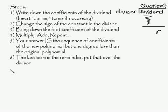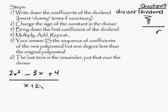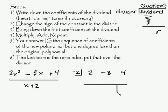I have 2x squared minus 3x plus 4, and this is all going to be over x plus 2. We're going to write down the coefficients of the polynomial, so you have 2, negative 3, and 4, and we're going to change the sign of the constant of the divisor to negative 2, and set this up over here like we did before.